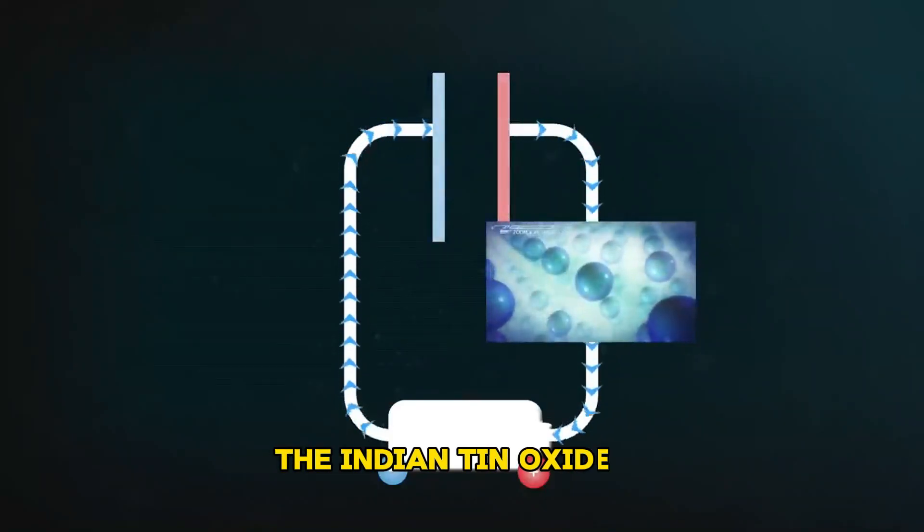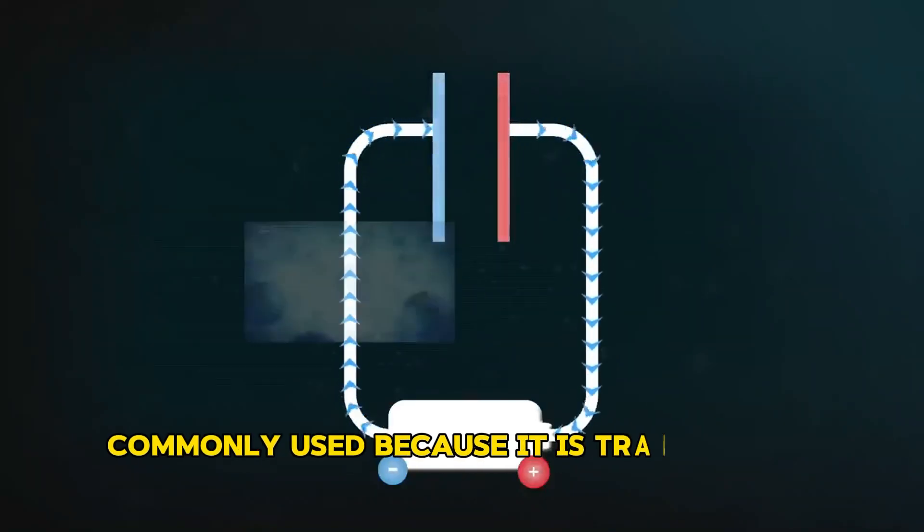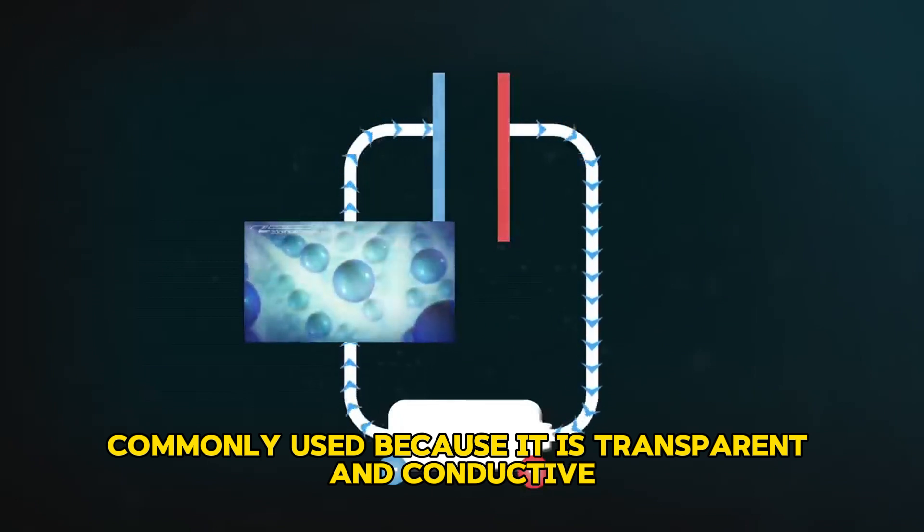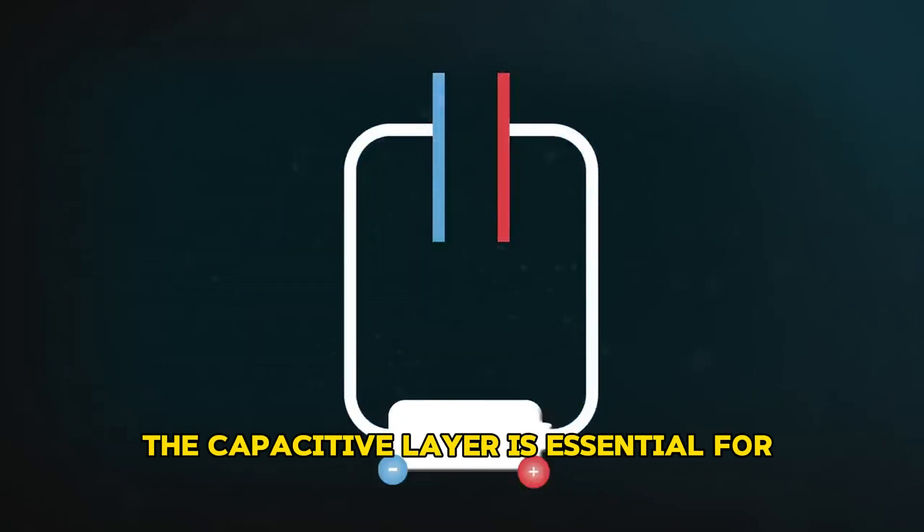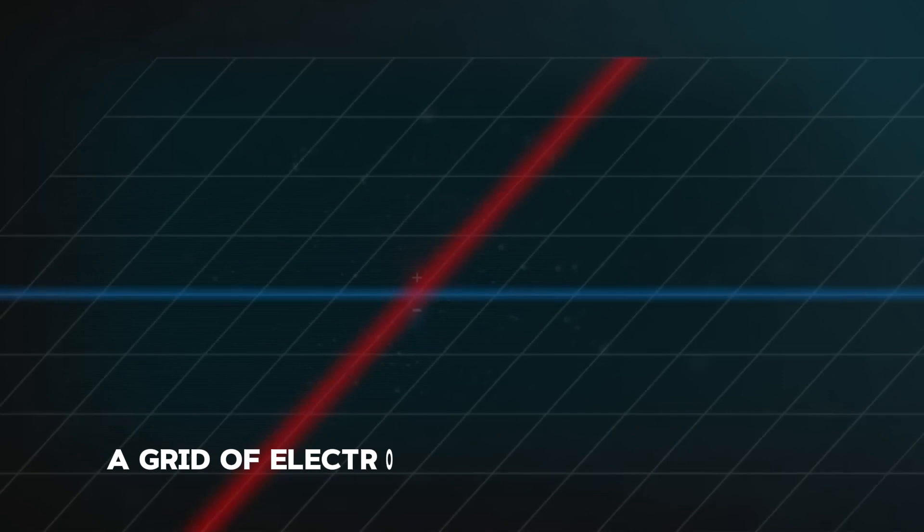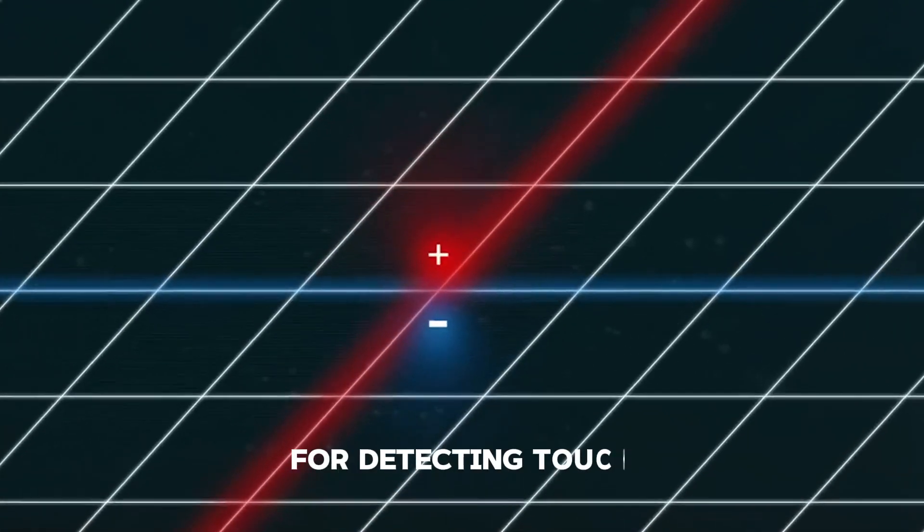Transparent conductive layer. Indium tin oxide is commonly used because it is transparent and conductive. The capacitive layer is essential for creating a grid of electrodes that are responsible for detecting touch input.